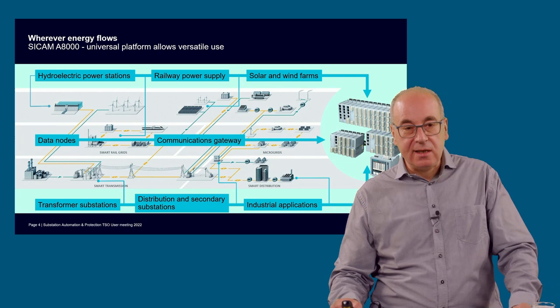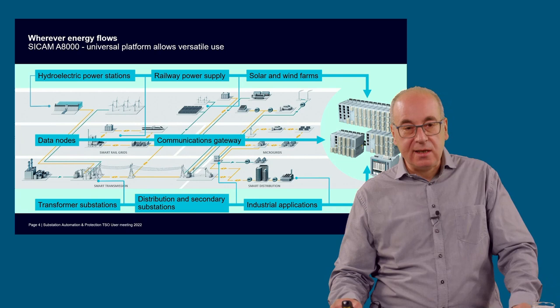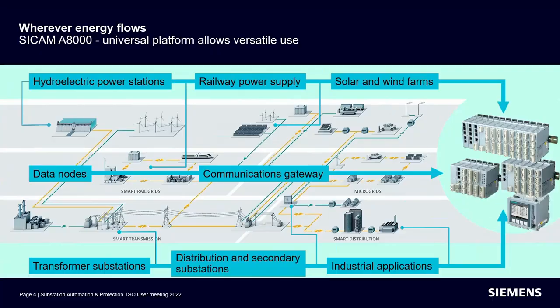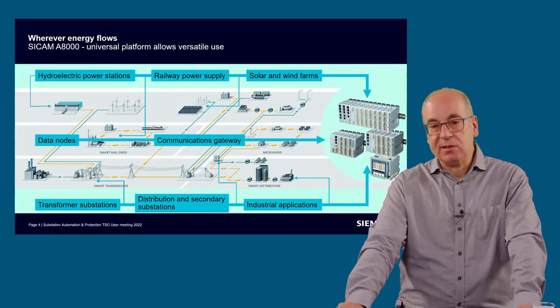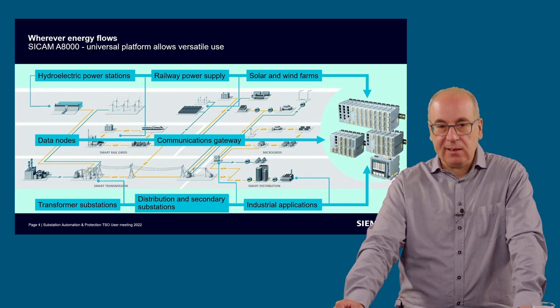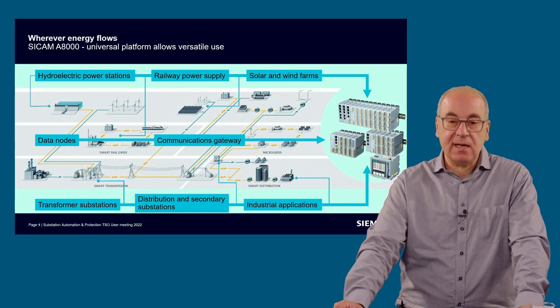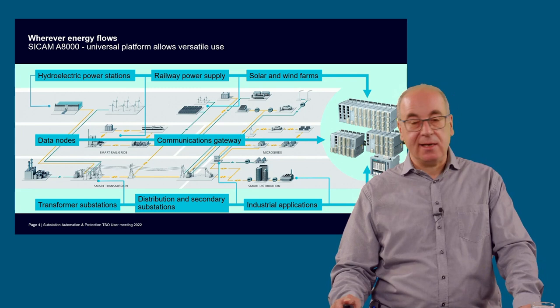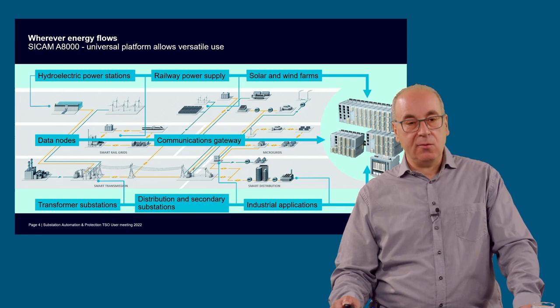If you see here the slogan we are using, some of those questions can be answered. SICAM 8000 is our universal platform allowing versatile use — wherever energy flows, you can use our SICAM 8000. The main focus for you is high-voltage and extra-high-voltage substations, but also medium-voltage substations, secondary distribution substations, railway applications, hydropower plants, photovoltaic plants, wind plants, and industrial applications. Our SICAM 8000 can be used as an RTU or a full-blown substation automation system.